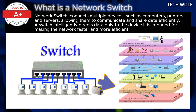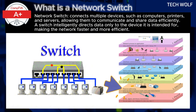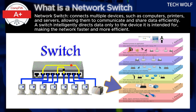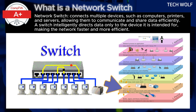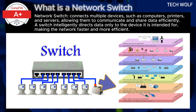Switch functionality. A switch operates at the data link layer, layer 2 of the OSI model, meaning it manages how data is transferred between devices. When data in the form of packets arrives at one of its ports, the switch reads the destination address — specifically the MAC address of the device — and forwards it only to the port where the destination device is connected. This reduces unnecessary traffic and improves the performance of the network by ensuring that data only reaches the intended recipient.